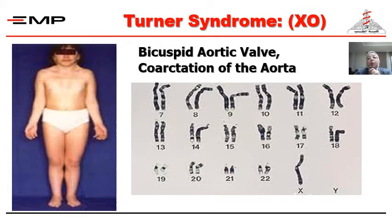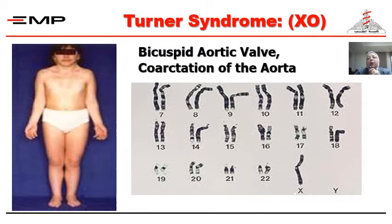Turner syndrome — the only patients who live with 45 chromosomes, and phenotypically they look like females. They may have a bicuspid aortic valve or coarctation of the aorta. So, if you see short-statured females with primary amenorrhea, cubitus valgus, and webbing of the neck, and the chromosomes show 45 chromosomes with absence of the Y chromosome or a second X, you should look for coarctation of the aorta. This is what we were talking about — anticipation of congenital heart. If you find the syndrome, you have to exclude the congenital heart associated with that syndrome.